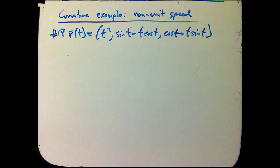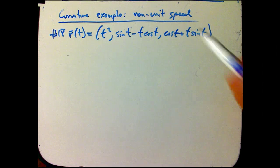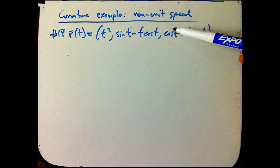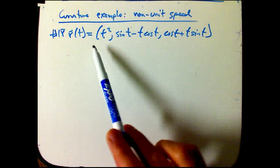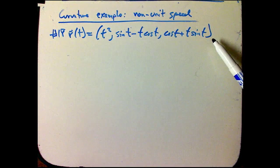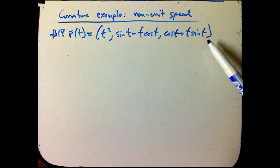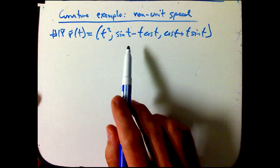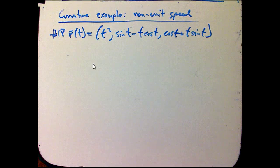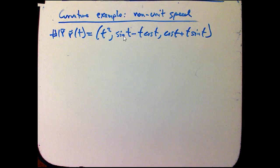Now let's look at an example of curvature with a non-unit speed curve. We'll see that it is more complicated. This one I took from the book because it's pretty hard to contrive a good medium difficulty problem here. First of all, let's look at what this curve would look like. We've got t squared and then some trig functions.